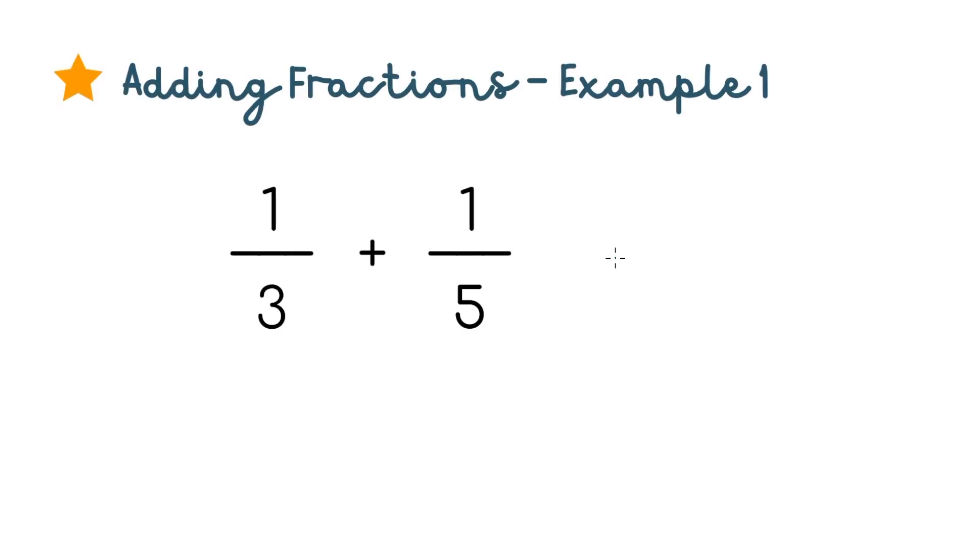Say we have two fractions, 1 over 3 and 1 over 5. In order to add them, we will cross multiply and multiply 1 times 5, which is 5.